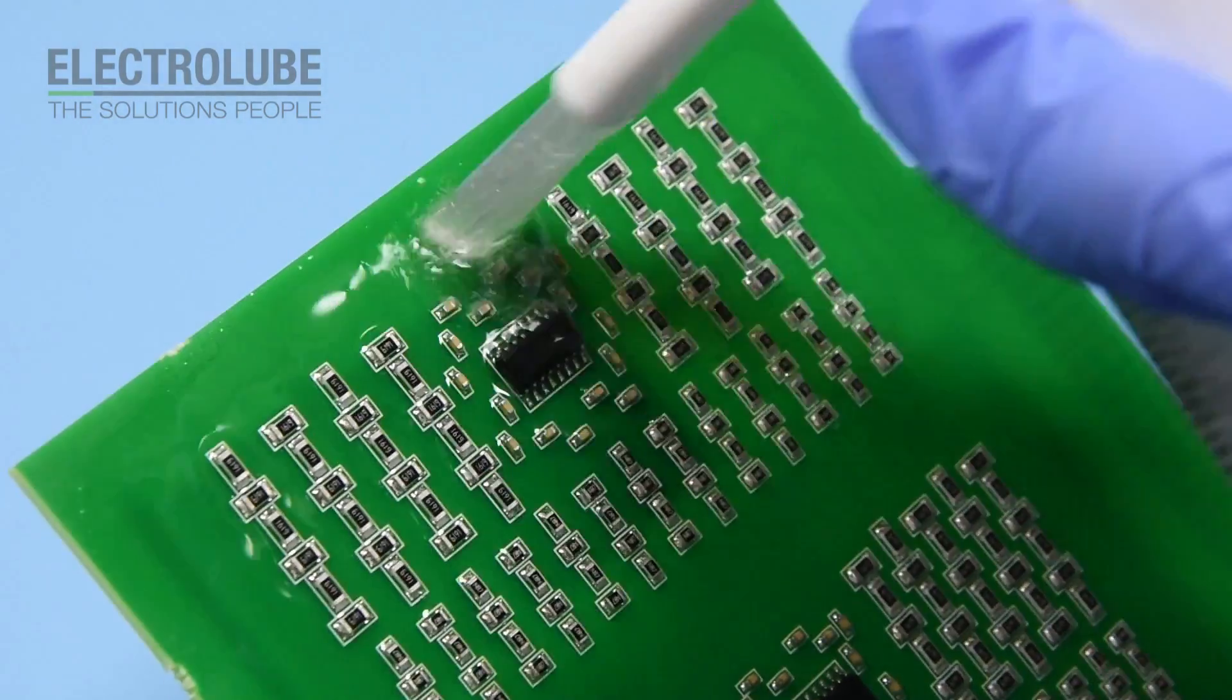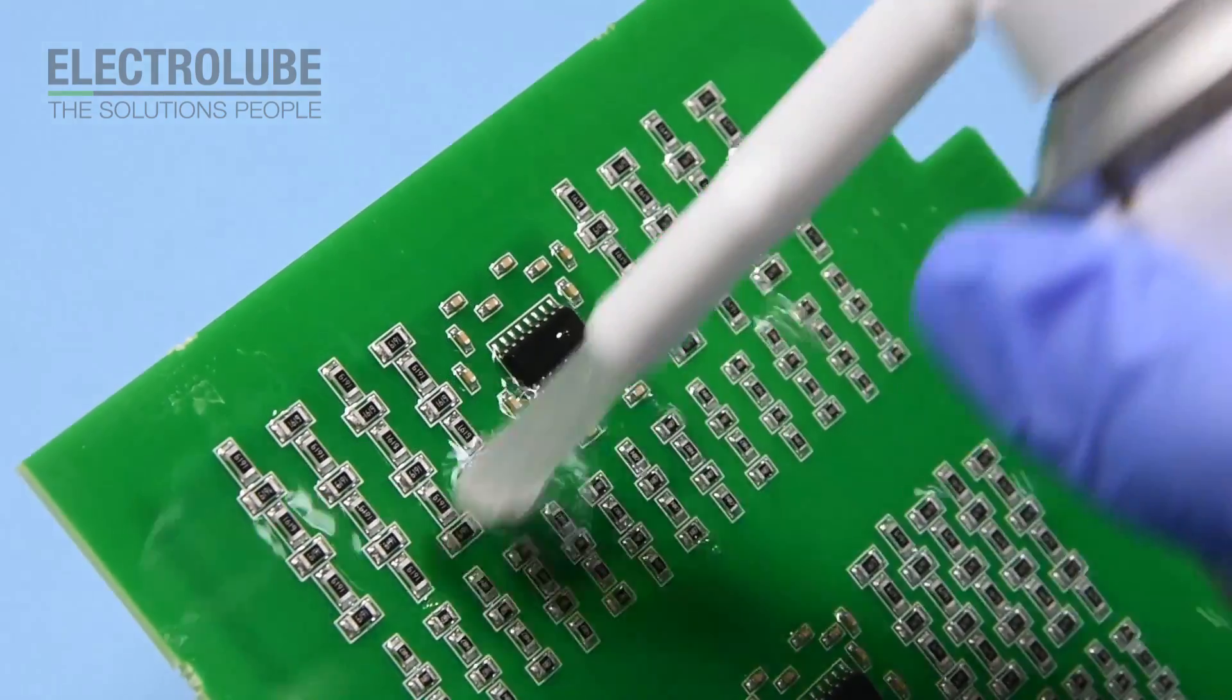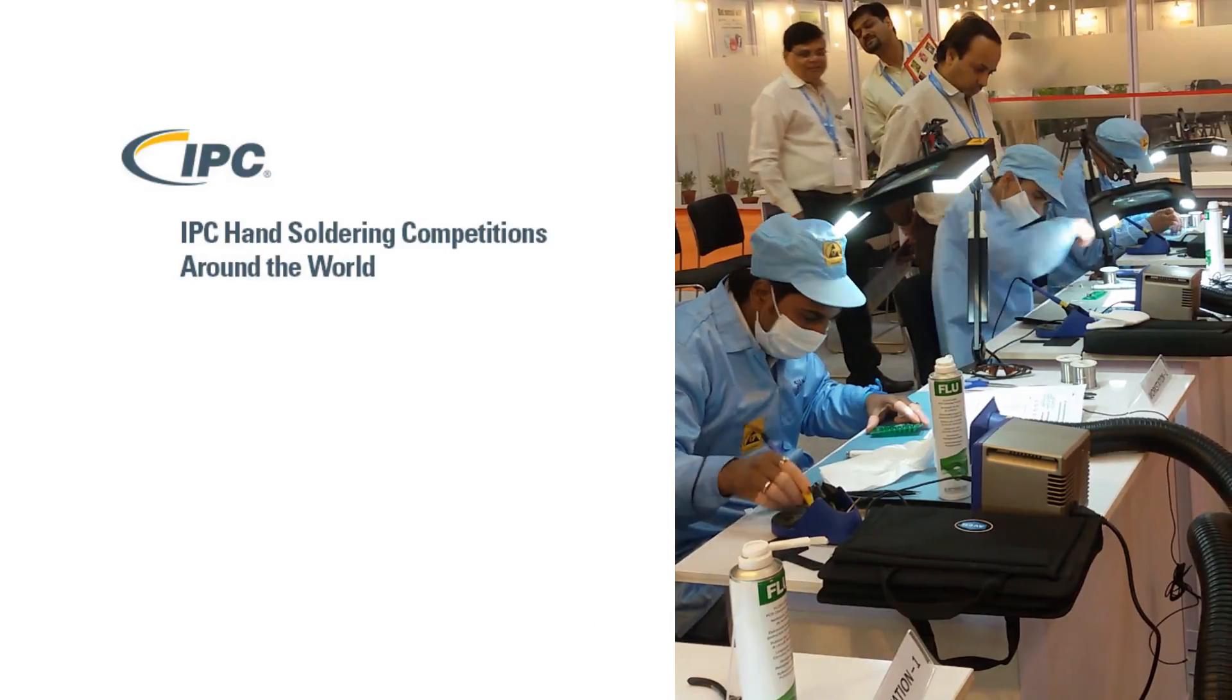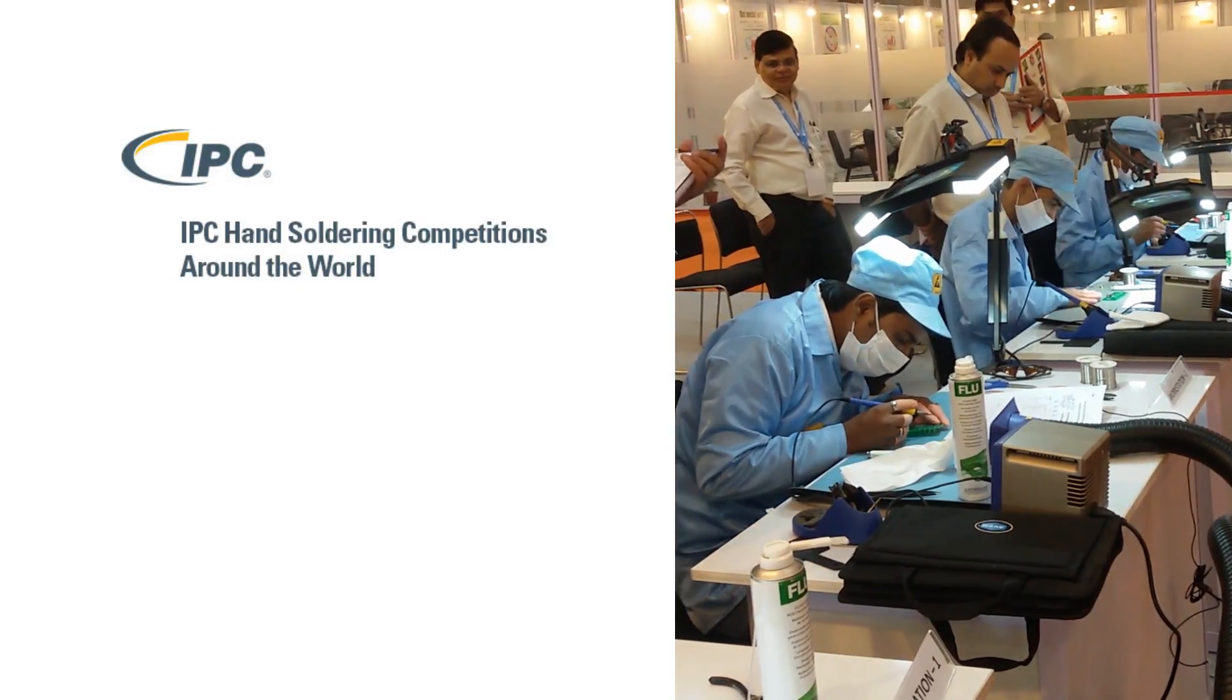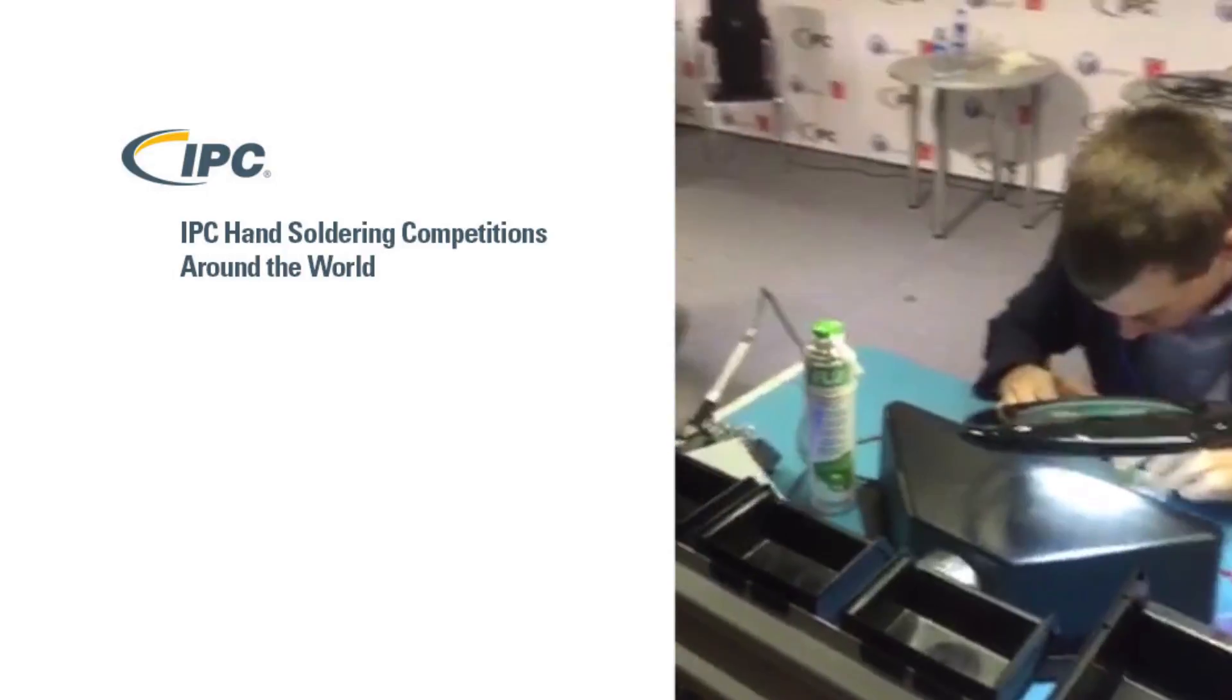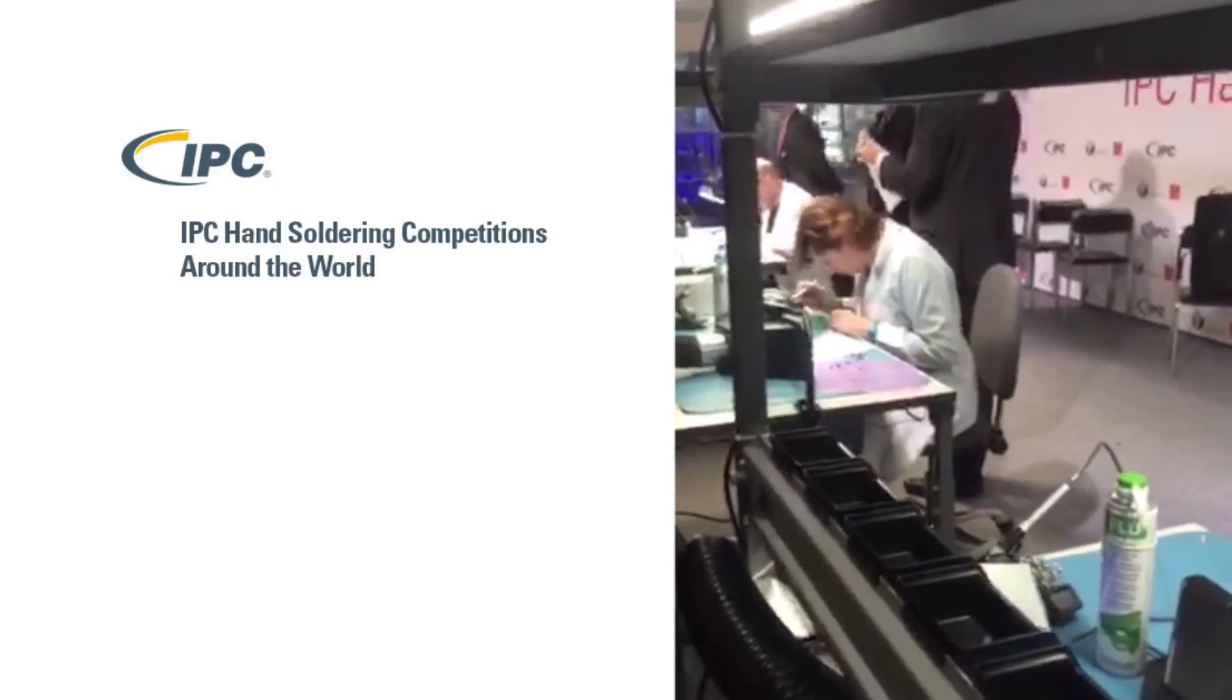Use FLU to give a final rinse after cleaning. FLU is available from distributors globally and can be found as the cleaner of choice at the IPC hand soldering competitions at electronics exhibitions around the world.